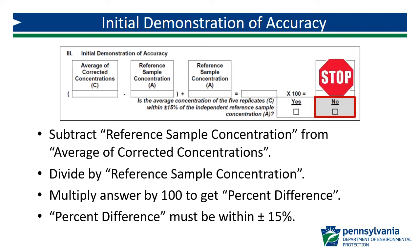If the percent difference is not within plus or minus 15%, the analyst's procedure, reagents, and equipment should be evaluated so the source of error can be determined and addressed. Once any issues have been identified and corrected, the IDC should be repeated.